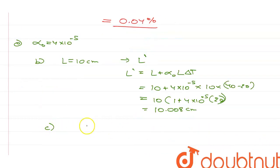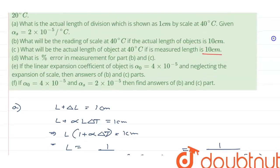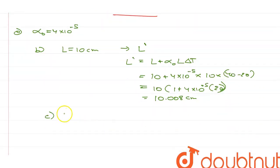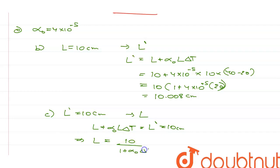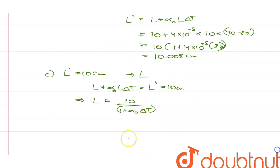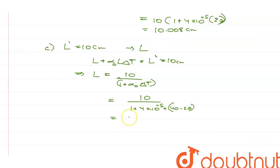Now the C part for E. The measured length at 40 degrees Celsius is given as 10 centimeters, so L dash equals 10 centimeters, and we have to find L. So L plus alpha naught L delta T equals 10 centimeters, meaning capital L equals 10 upon 1 plus 4 into 10 raised to the power minus 5 into 20, which equals 9.992 centimeters.